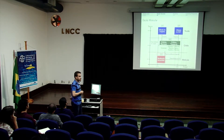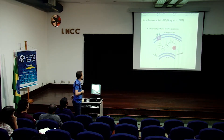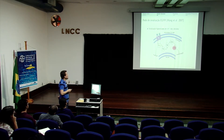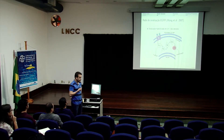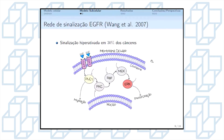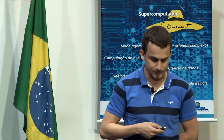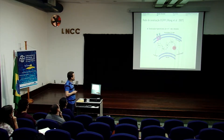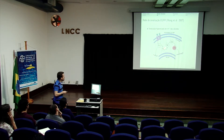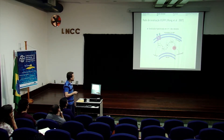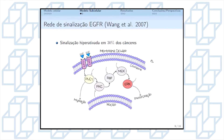Na escala molecular, nós utilizamos o sistema de EDOs para representar a sinalização intracelular. Utilizamos o modelo de Wang e parceiros de 2007, que representa a rede de sinalização do EGFR — o receptor do fator de crescimento do endotélio. Esse tipo de rede de sinalização do EGFR é hiperativada em 30% de todos os cânceres. Dado o par EGF e EGFR, ela é ativada e inicia-se um processo de reação química no citoplasma celular, nos dando uma resposta tanto de migração como de proliferação. Os principais compostos dessa rede de sinalização são: PLC-Gama, PKC, RAF, MEC e ERC. O PLC-Gama e o ERC são responsáveis, de acordo com a sua concentração, por fornecer a resposta de migração e proliferação.